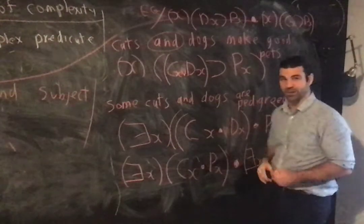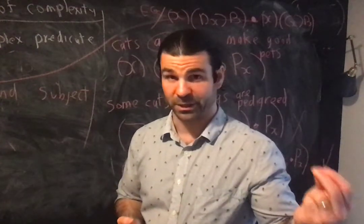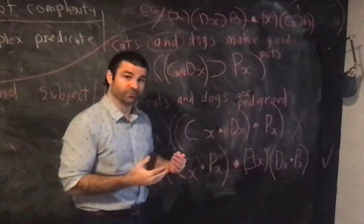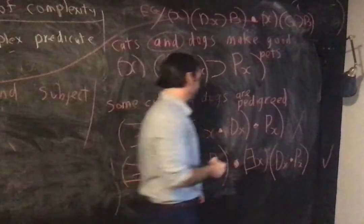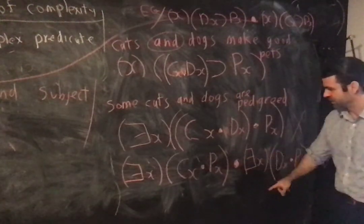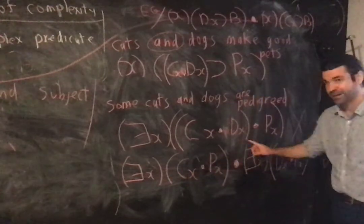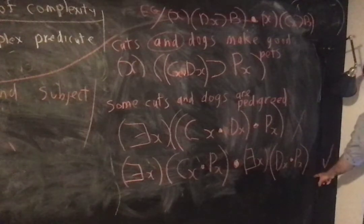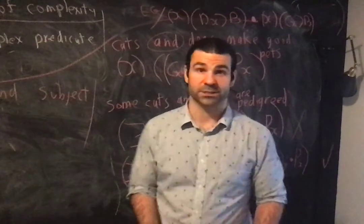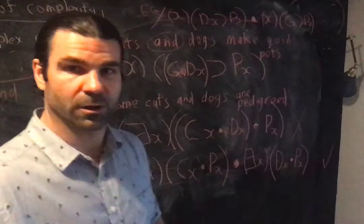Some cats and dogs are pedigreed because I'm asserting is true that there exist pedigreed cats and also there exist pedigreed dogs. So I need to avail myself of this form here. This is the correct one. This is a conjunction. There exists an x such that both x is a cat and x is pedigreed and there exists an x such that x is a dog and x is pedigreed. I just said two things separately, but that's what I need to say. That correctly captures a logical form of that.